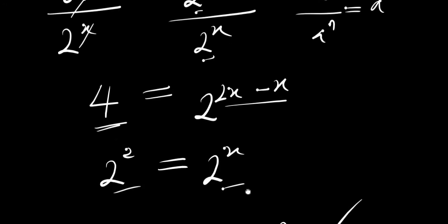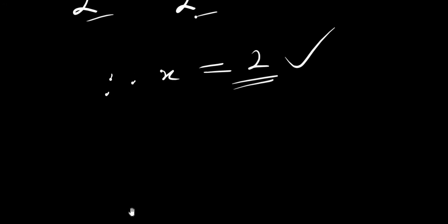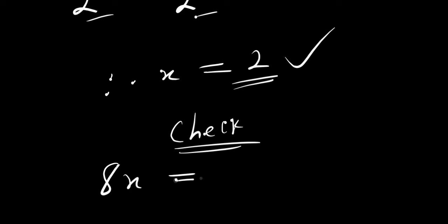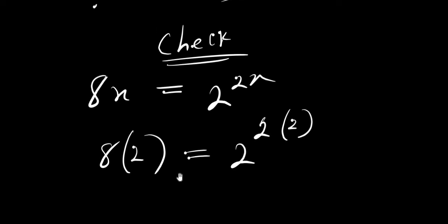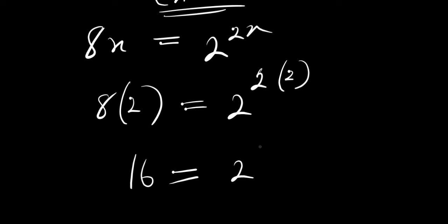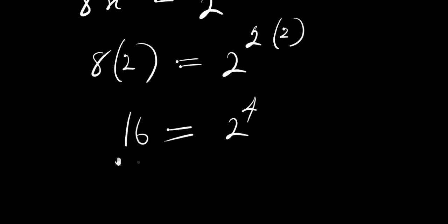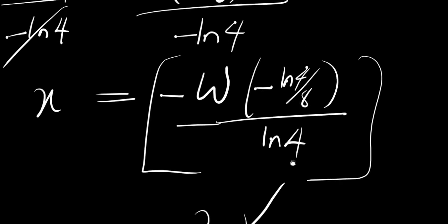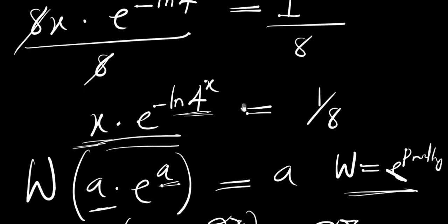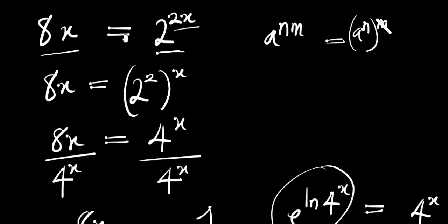With any of the methods you get the same answer. To verify, we check if x equals 2 satisfies 8^x equals 2^(2x): 8 times 2 equals 16, and 2^(2 times 2) equals 2^4 equals 16. This confirms x equals 2 is correct. That is it for this video — I believe you enjoyed the class. Please don't forget to subscribe to my YouTube channel and share this video with your friends. Thank you, goodbye, and have an absolutely wonderful day ahead.